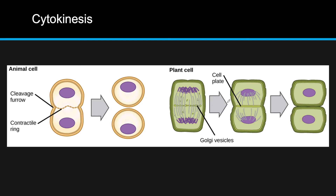In plant cells, we don't really have a cleavage furrow because the cell wall must be maintained. Instead, Golgi vesicles move to the center of the cell and form a tubular structure — essentially two layers — connecting the existing cell walls. The vesicles deposit cellulose in the middle to create a cell plate, which serves as the new cell wall. So plants have a cell plate, whereas animal cells have a cleavage furrow.